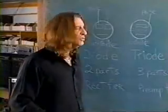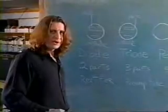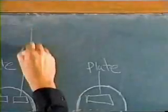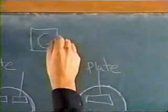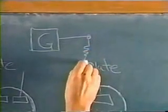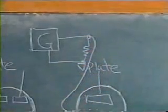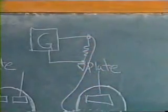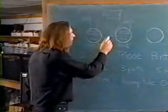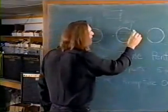Triodes are used to amplify the guitar signal. When you plug your guitar into the input jack on your amp, the input jack has a resistor going to ground, which goes back to your guitar, and the top of that resistor goes to the control grid of a tube. With a minor signal, it can produce a major signal.